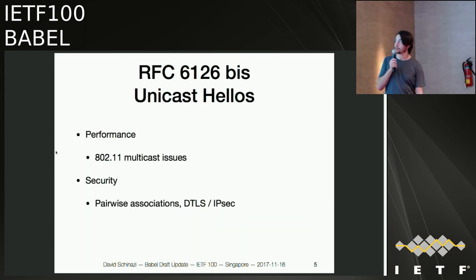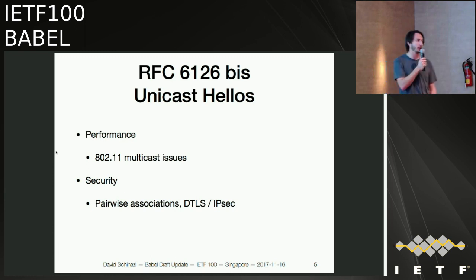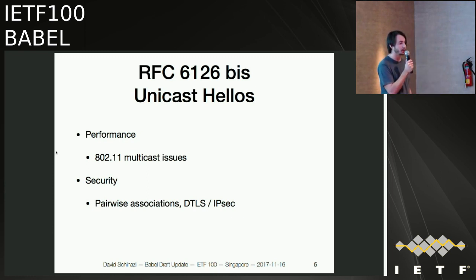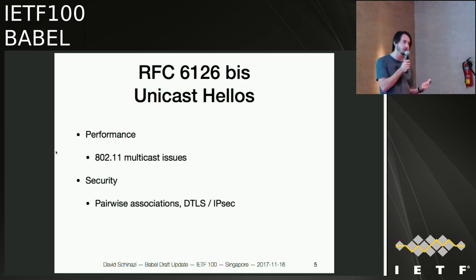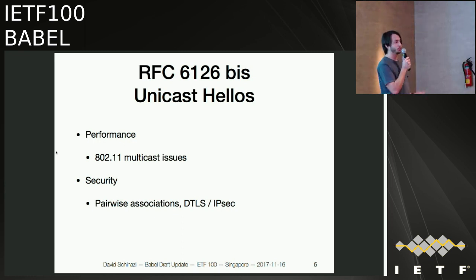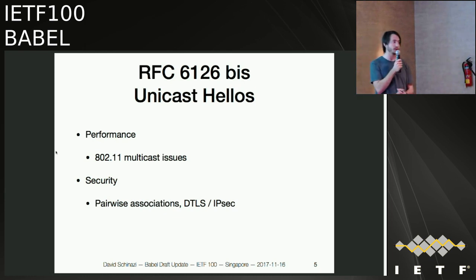The other extension is unicast hellos. There are two reasons for these: performance, because on some link-layer technologies like Wi-Fi multicast performance is really bad, and also some link-layer technologies don't even support multicast. In the original Babel spec, every TLV could be sent over unicast or multicast, with two exceptions: acknowledgements needed to be unicast and hellos needed to be multicast. We've now introduced unicast hellos, which allows you, once you've discovered another host, to run the entire protocol over unicast — more efficient and it enables security with unicast-only solutions such as DTLS or IPsec.